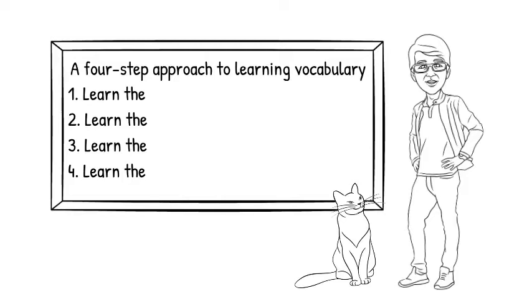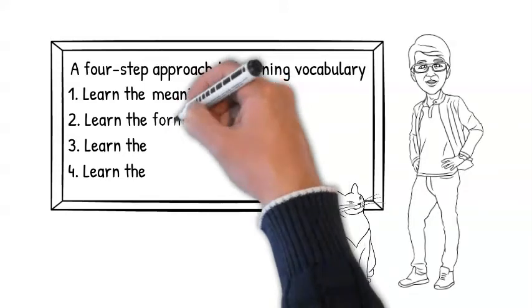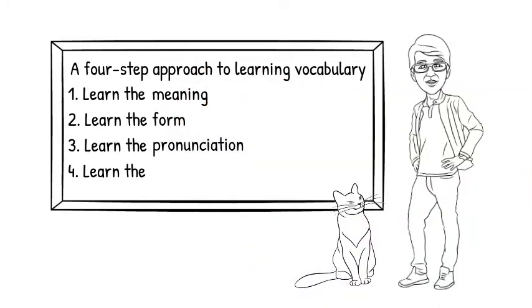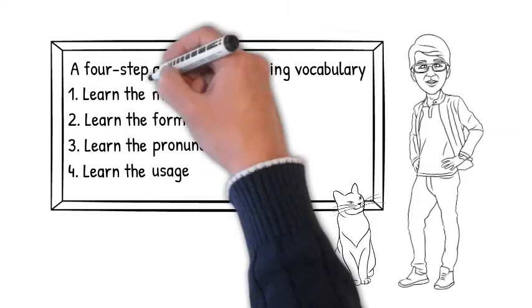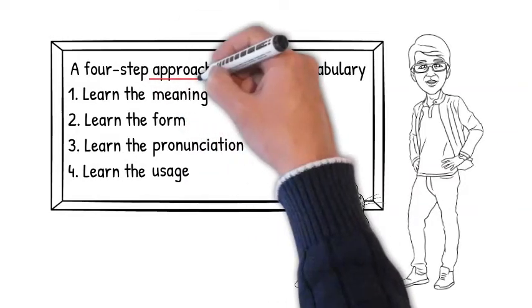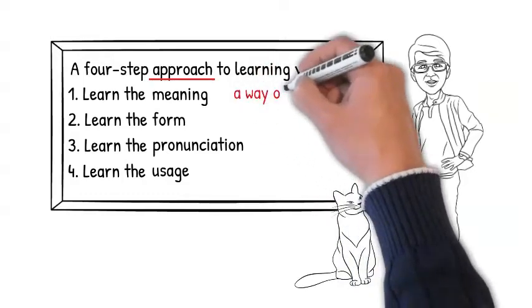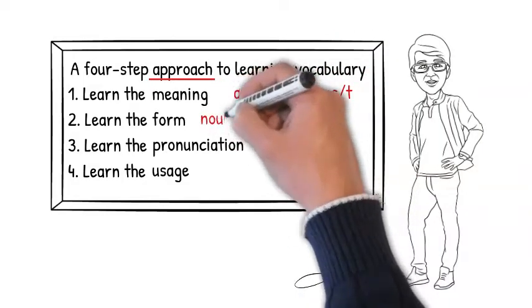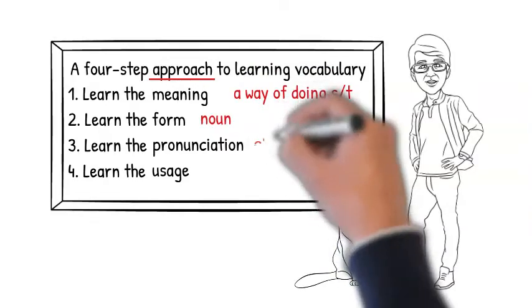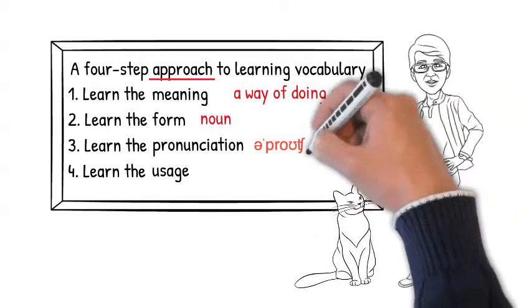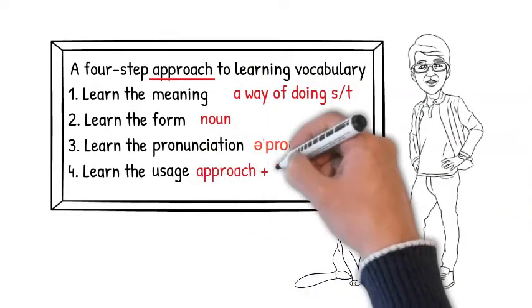Okay, here they are. When you learn a new word, you need to learn the meaning, the form, the pronunciation, and the usage. Let's see how this works with this word, approach. So the meaning is a way of doing something. The form is noun. Here is the pronunciation. And last but not least is the usage.